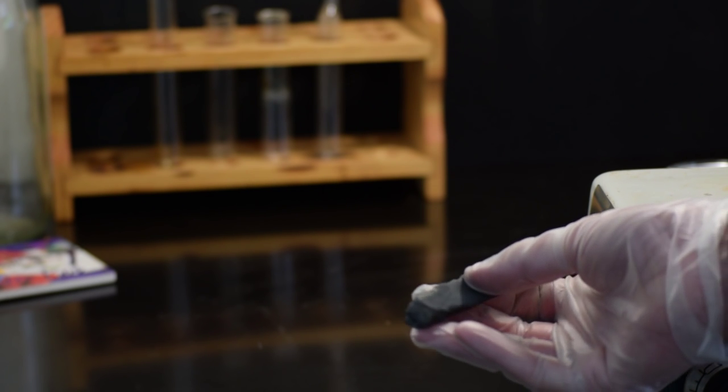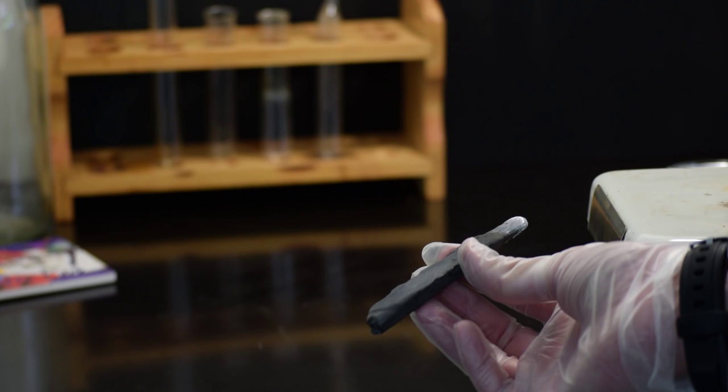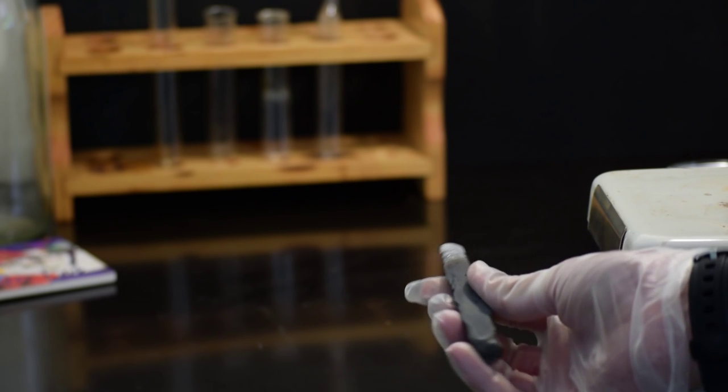Here is the finished lead dioxide coated electrode. As you can see, I took a little bit of sandpaper and carefully sanded the top so I have a conductive surface to hook electrodes onto.